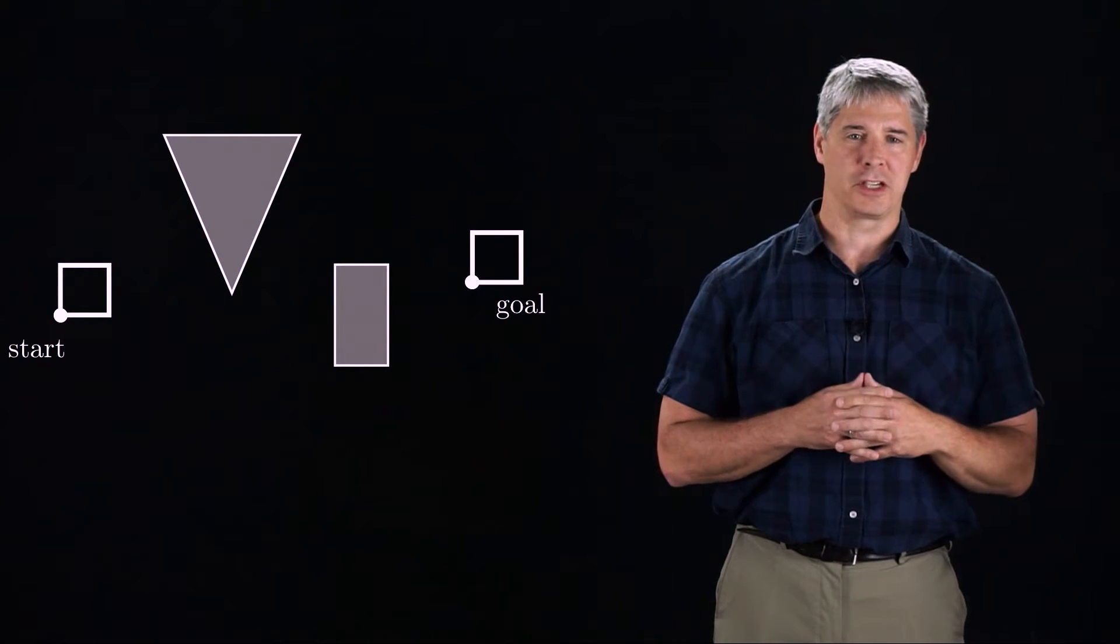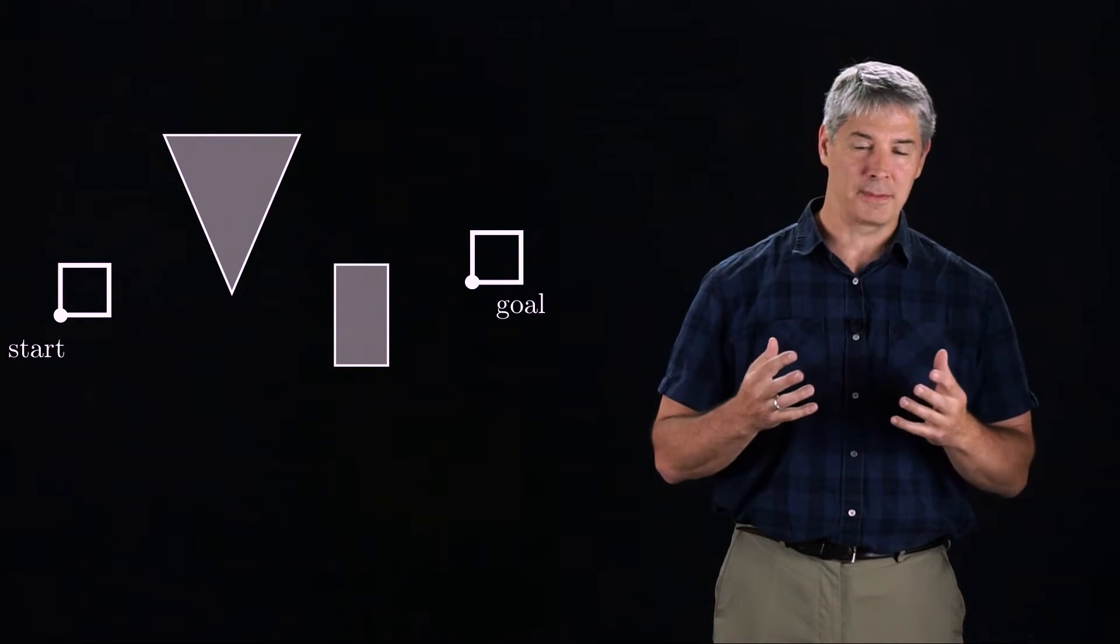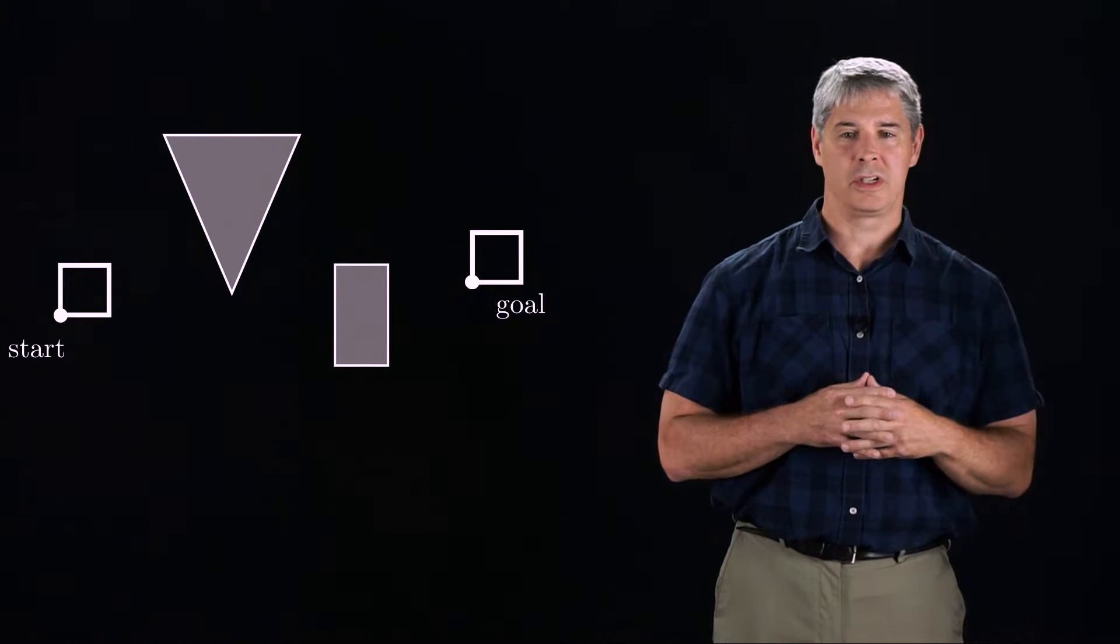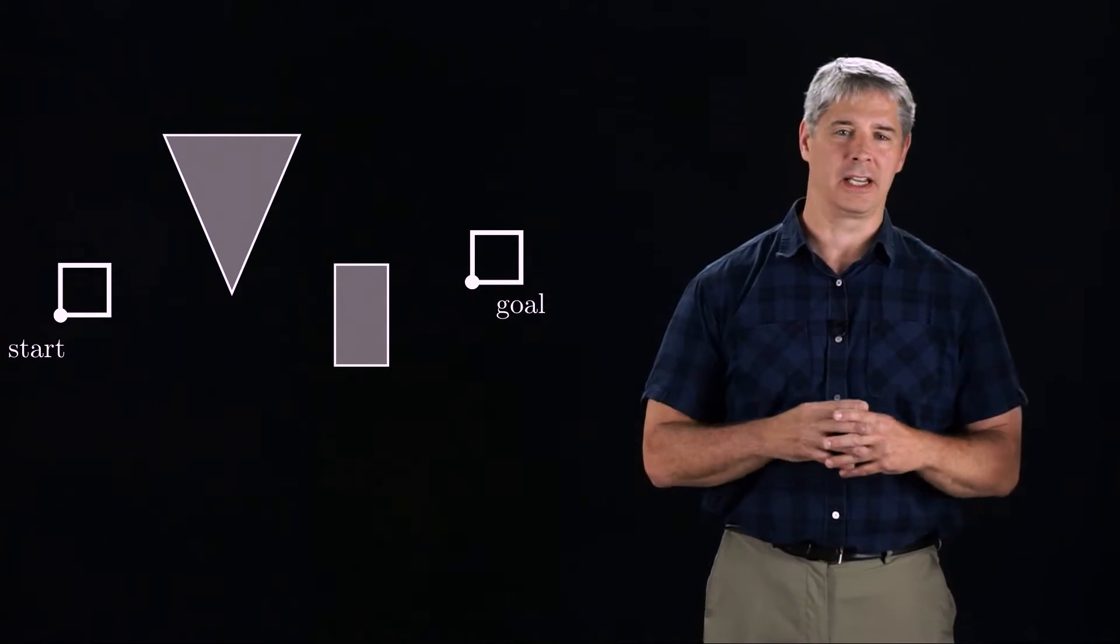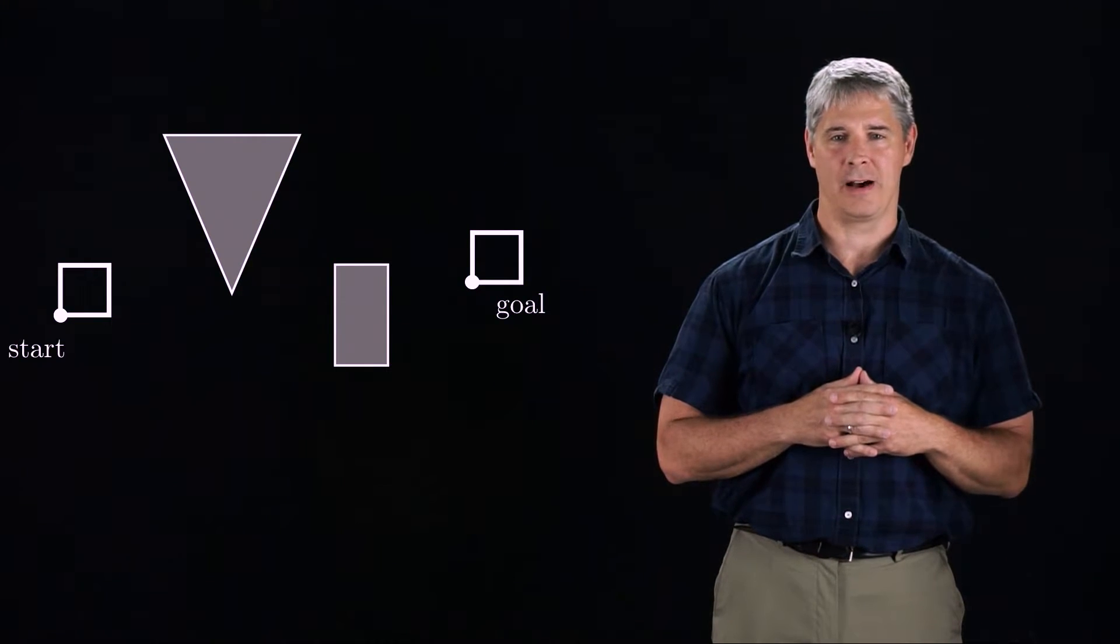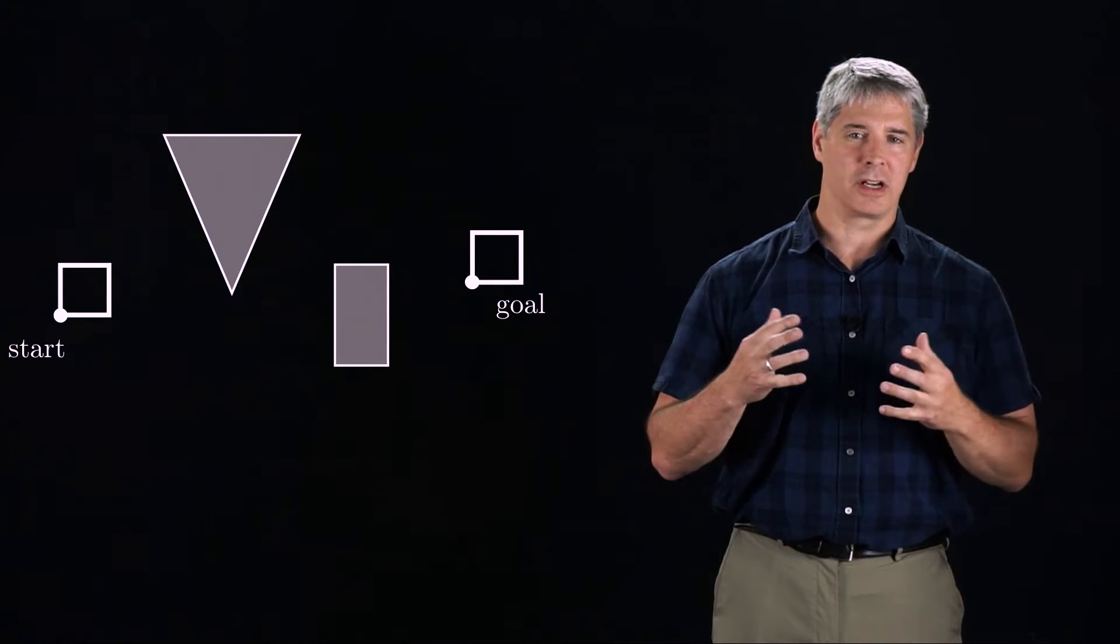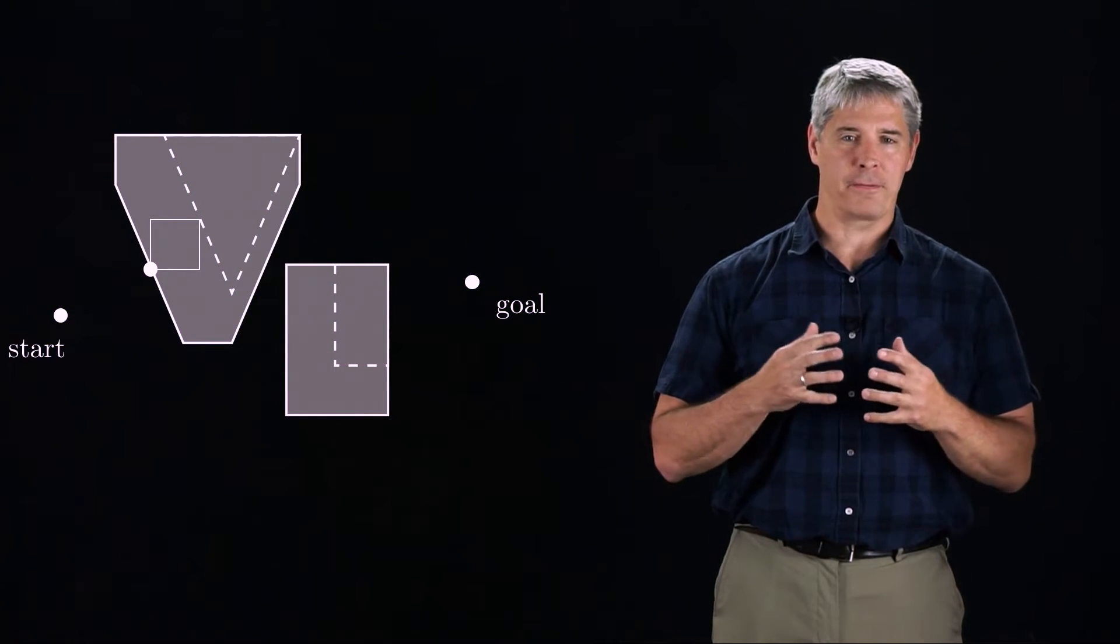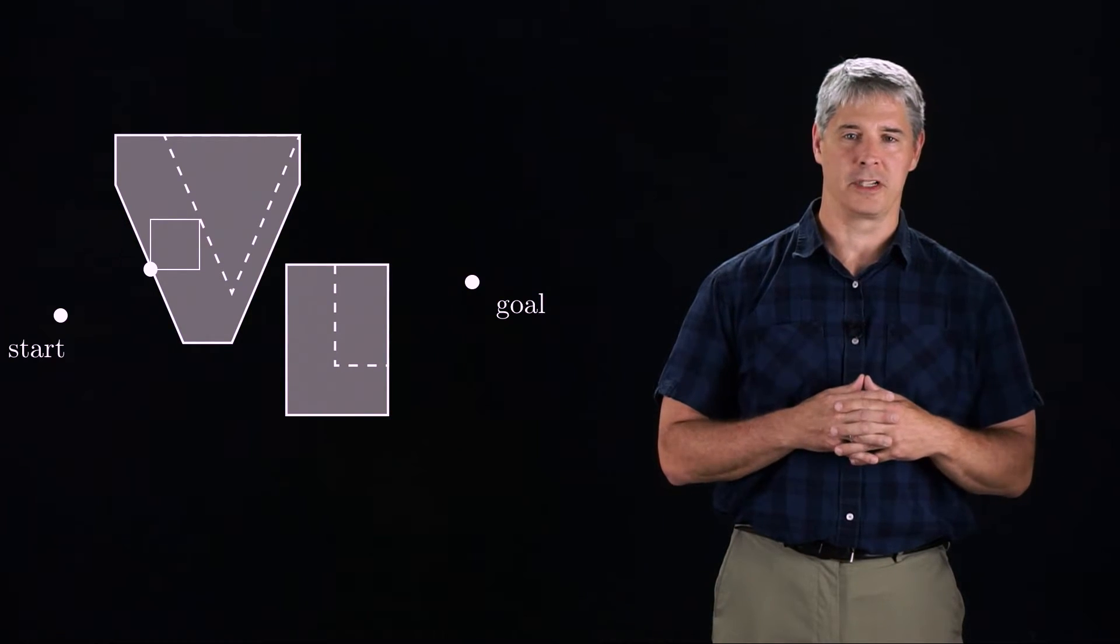The first step is to transform the obstacles into C-space obstacles. Since the obstacles are in a plane, and the C-space is also a plane, this transformation is simple. We just slide the square robot around the edges of the obstacles and keep track of the path traced out by the robot's reference point at its lower left corner. This results in C-space obstacles that look like this. If the reference point of the robot is outside the region's shaded gray, then the robot is in free space.